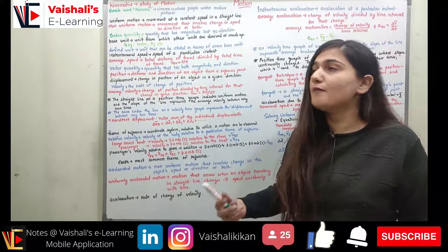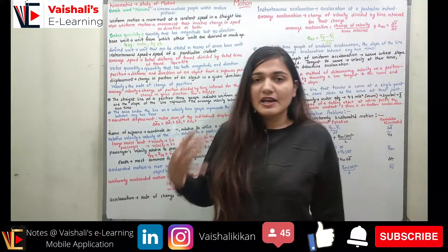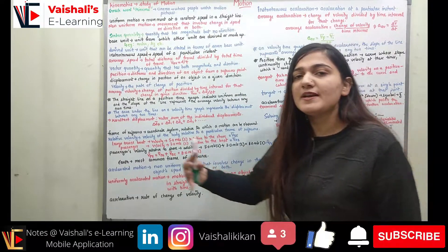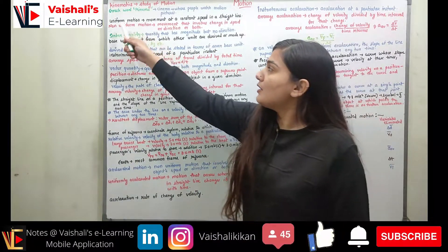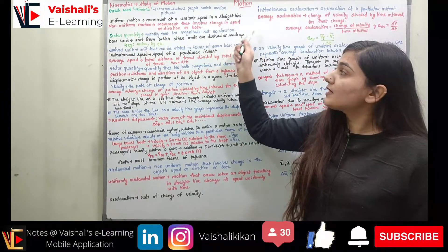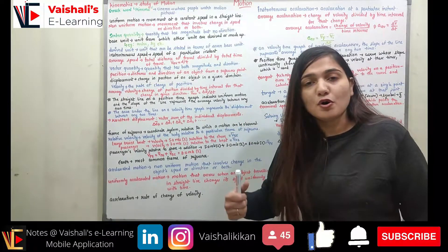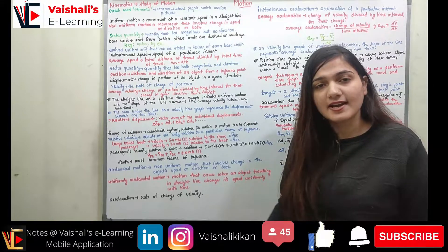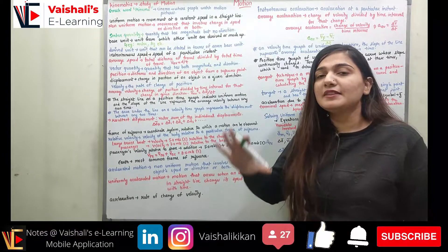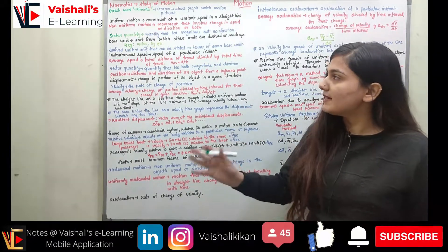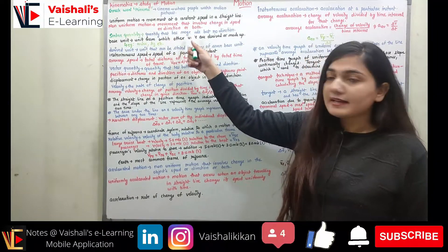Uniform motion is movement with a constant speed in a straight line — moving in one direction only at constant speed. Non-uniform motion is movement that involves either a change in speed, a change in direction, or both. You must know the difference between uniform and non-uniform motion.